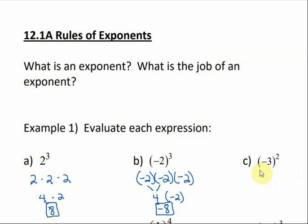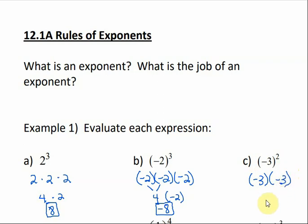In C, we have negative 3 squared, or to the second power. That just means negative 3 times negative 3, which would be a positive 9.